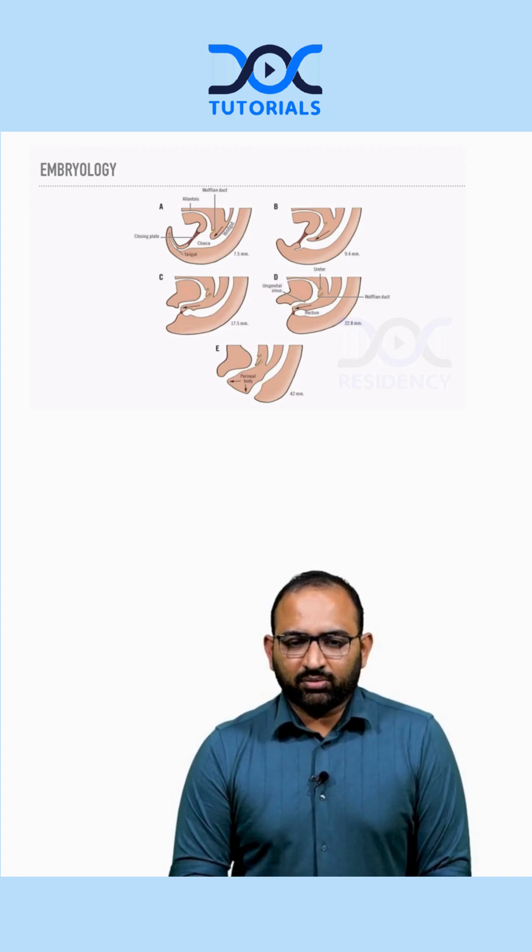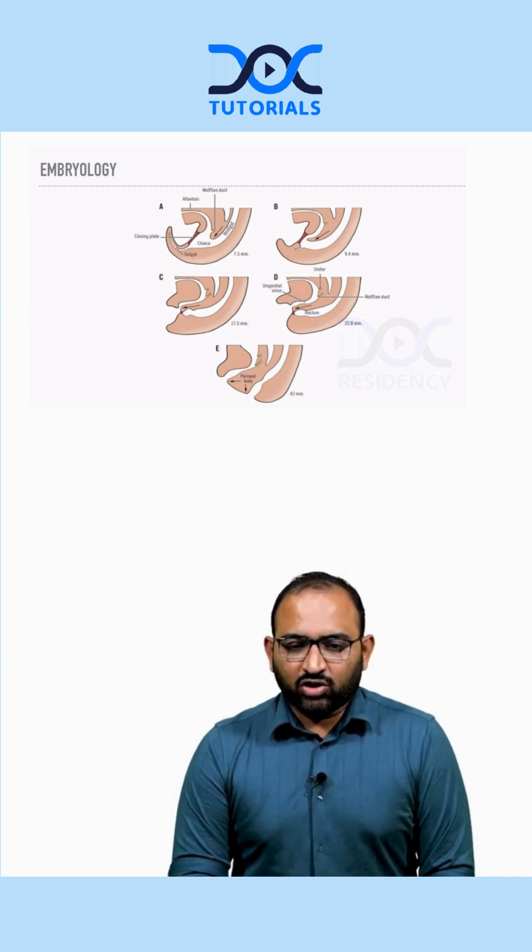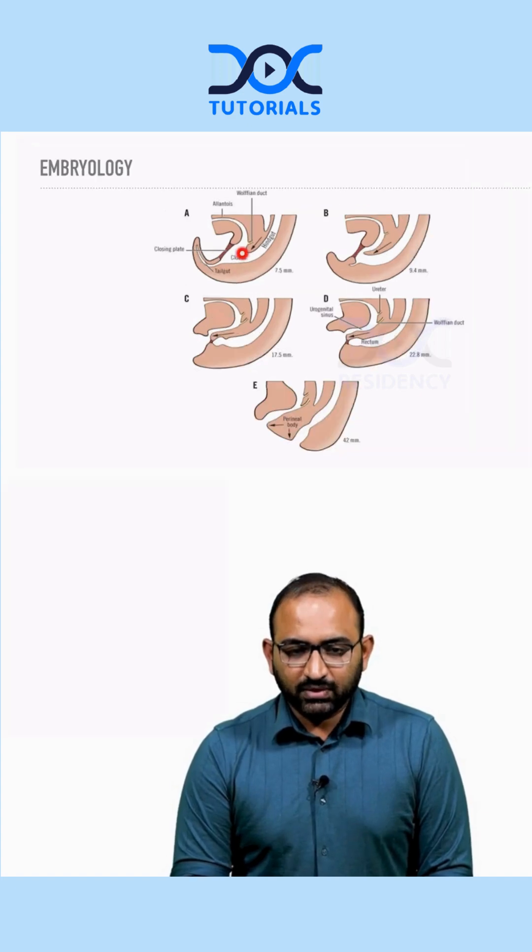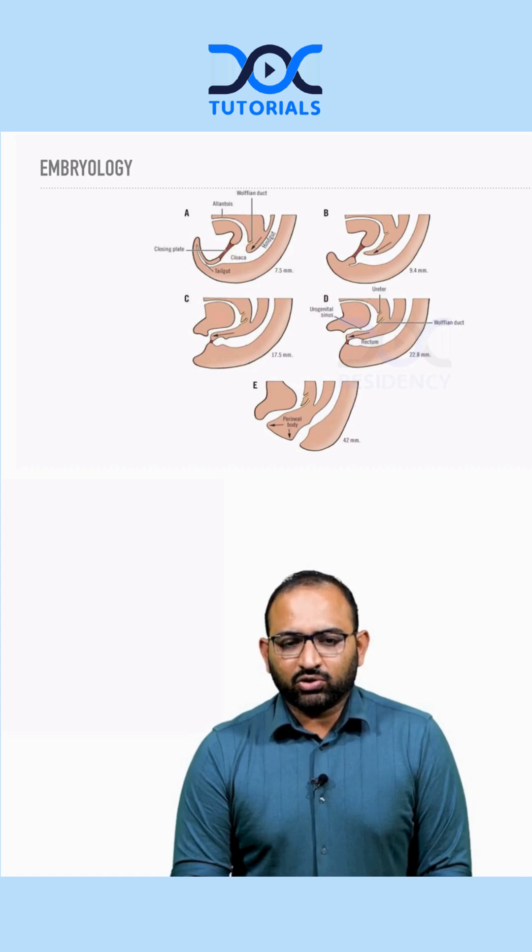In embryology, when a child develops, there is usually a common cloaca opening for both the hindgut, the gut exit, and the urinary tract. They both open into a common channel called cloaca when the child develops. This is called the cloaca plate.